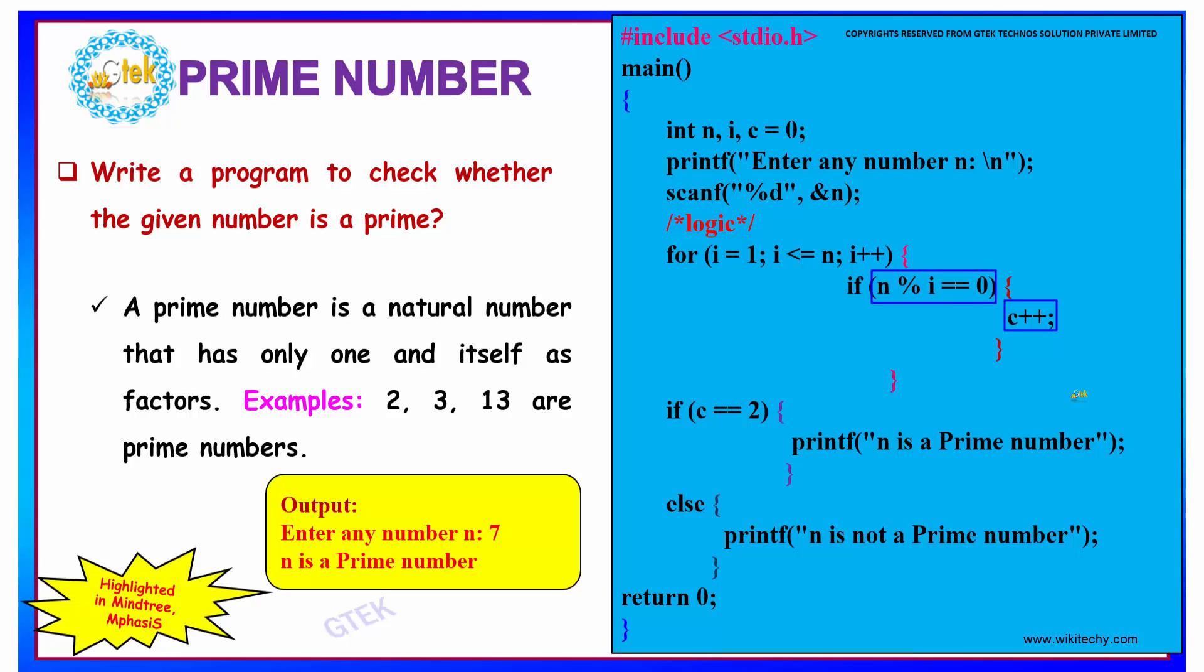Since 7 is a prime number, c will be incremented only twice. Consider 7 modulo 1 equals 0 because 7 is divisible by 1. Hence, c is incremented once.